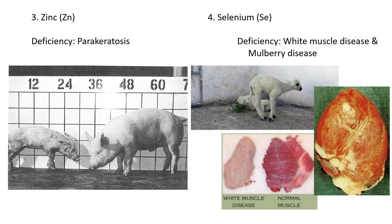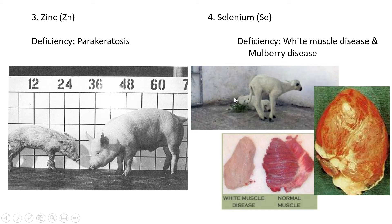Fourthly is selenium. When there's a deficiency of selenium in animals, it can cause white muscle disease and mulberry disease. With white muscle disease, it literally affects the muscles — a normal muscle sample is kind of pink or dark pink, but here we see some white muscle with not enough red pigment and not enough blood flowing through. This causes animals to experience difficulty moving and muscle contractions. These animals are not healthy, and it's also not healthy for us to eat their meat.